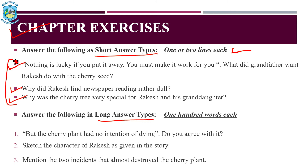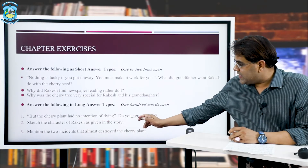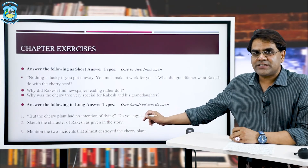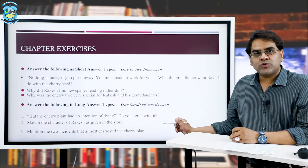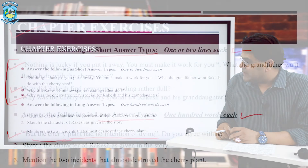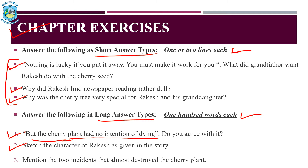Having done with these three short answer type questions, we are looking at the long answer types with at least 100 words each. The first one: 'But the cherry plant had no intention of dying — do you agree with it?' This question is extracted from a quotation in the text. Question number two: 'Sketch the character of Rakesh as given in the story.' Once we are thorough with the chapter summary, it's easy to define the character sketch. And the last question: 'Mention the two incidents that almost destroyed the cherry plant.'